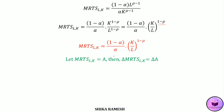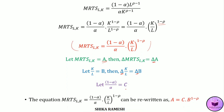Now let MRTS of labor for capital be denoted as a, so delta MRTS equals delta a. Let k by l be denoted as b, so delta k by l equals delta b. Let 1 minus alpha by alpha be denoted as c. We can then rewrite the equation as a equals c multiplied by b raised to 1 minus rho.